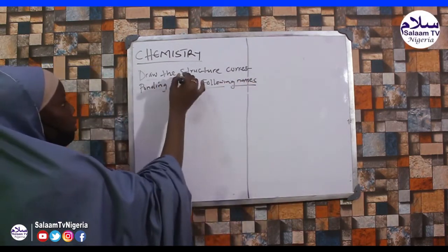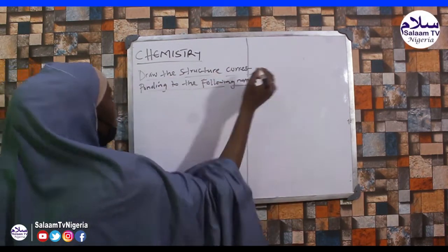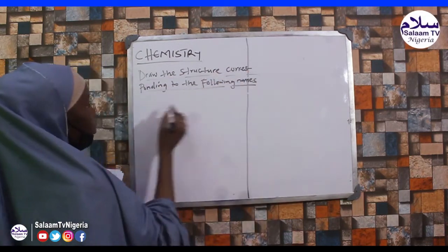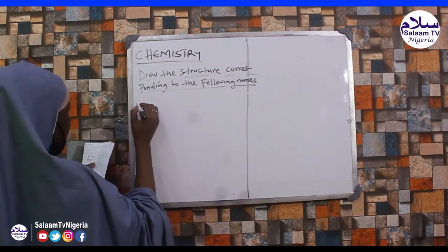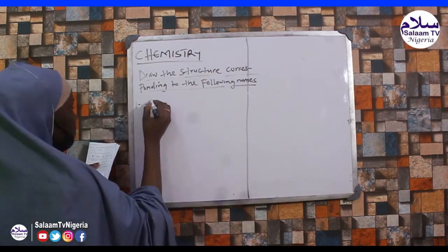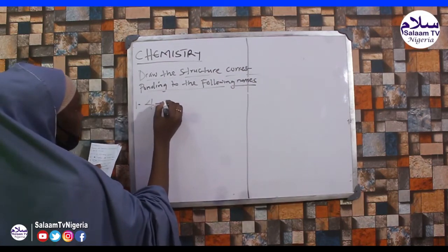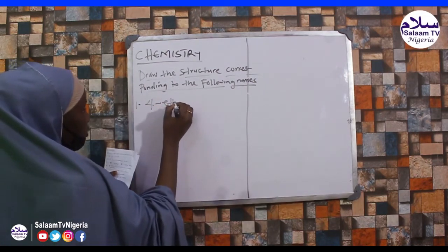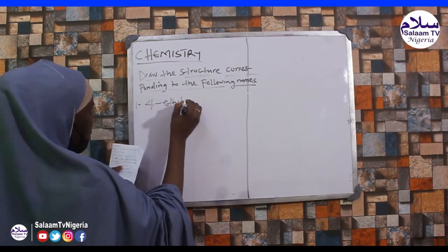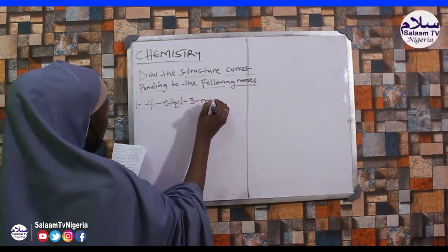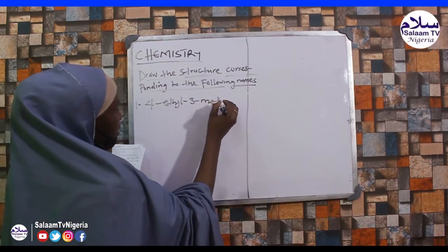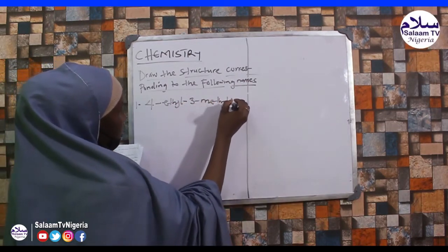Draw the structure corresponding to the following names. Number 1: 4-ethyl-3-methylhexane.